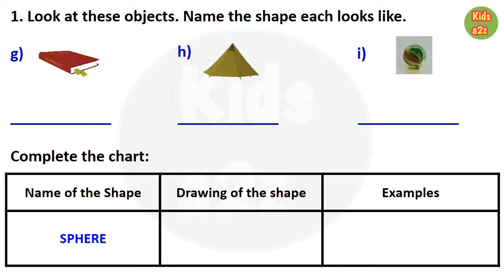Then under the book, they need to write cuboid; under tent, they need to write cone; and under the marble, they need to write sphere.